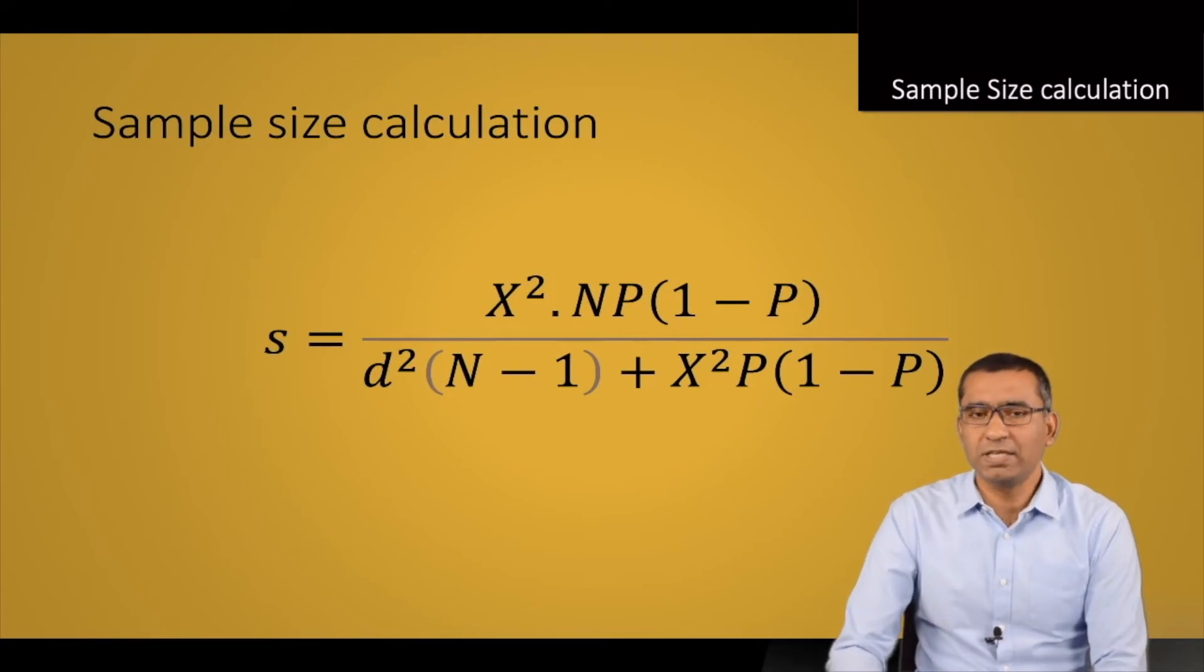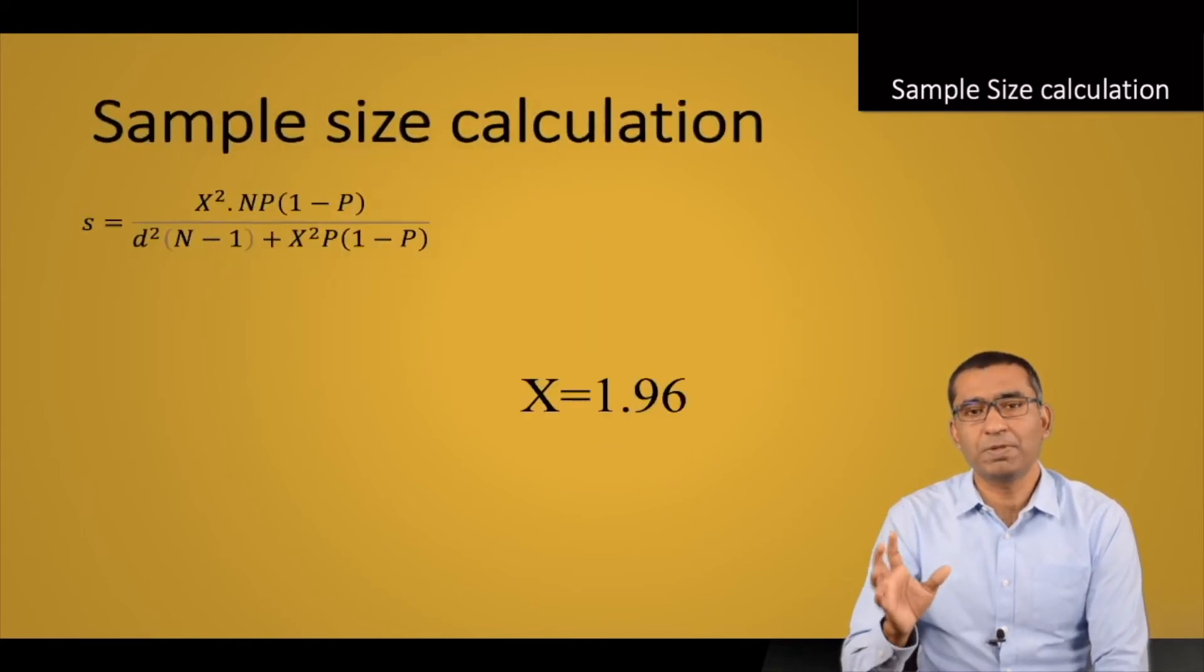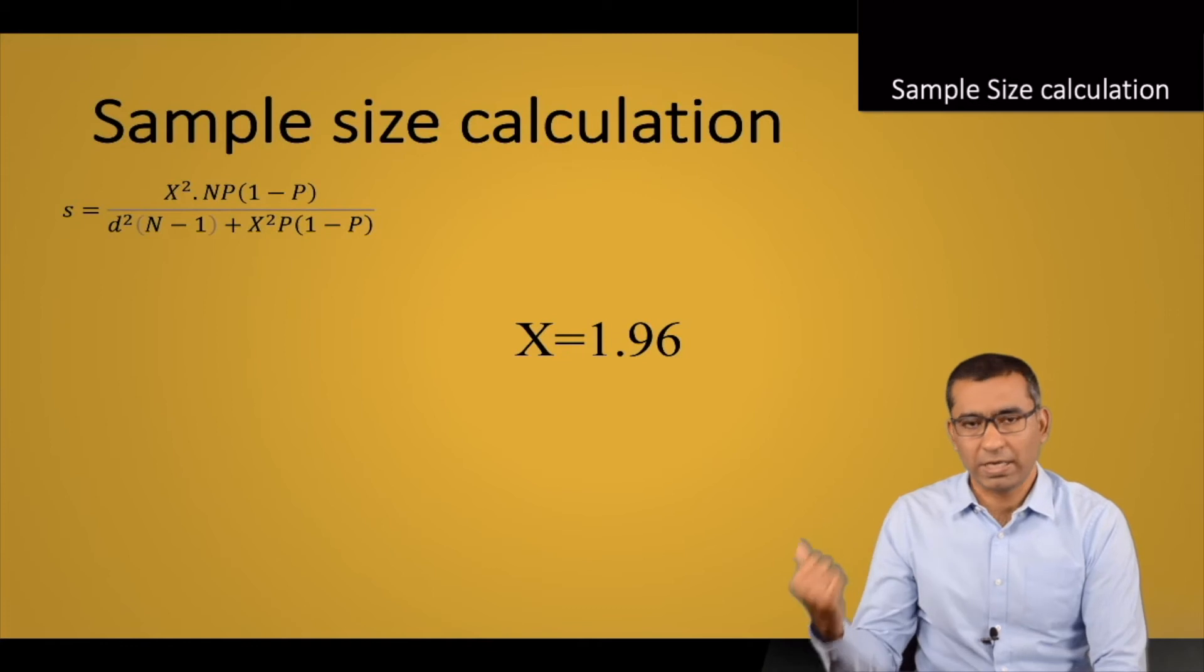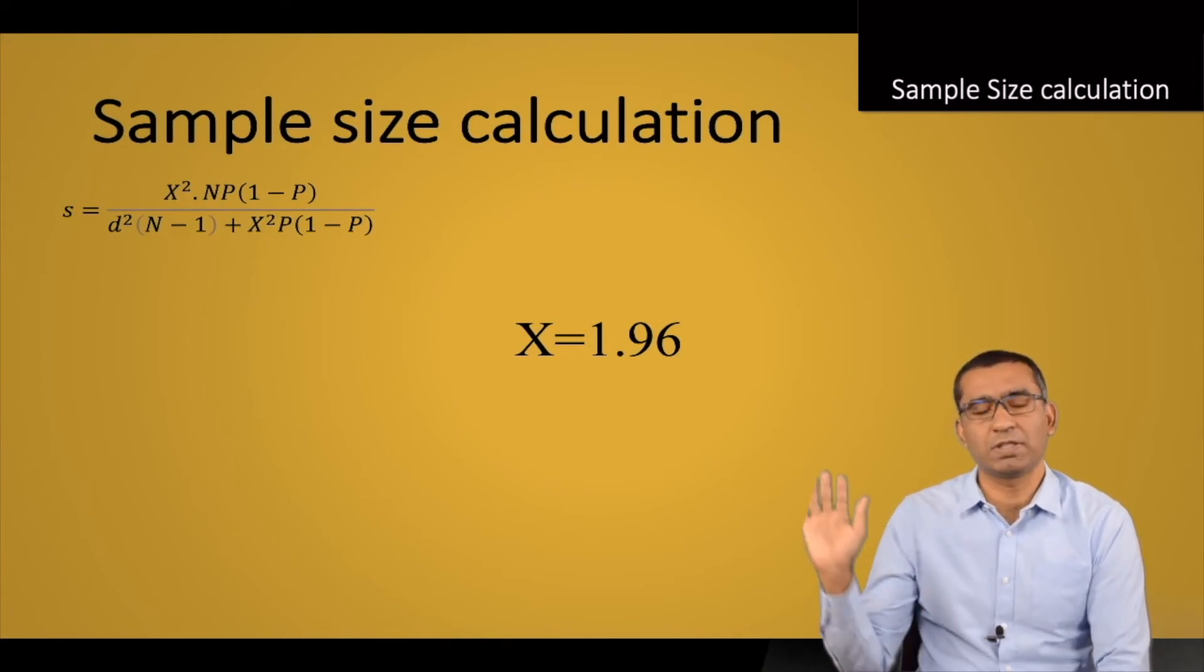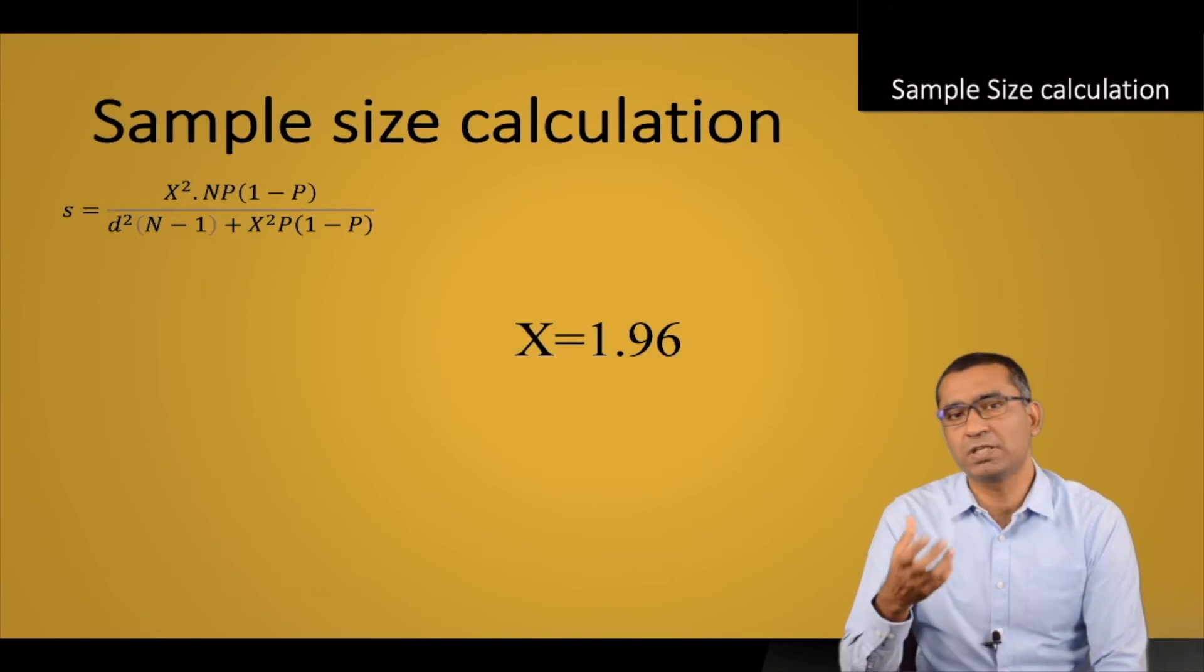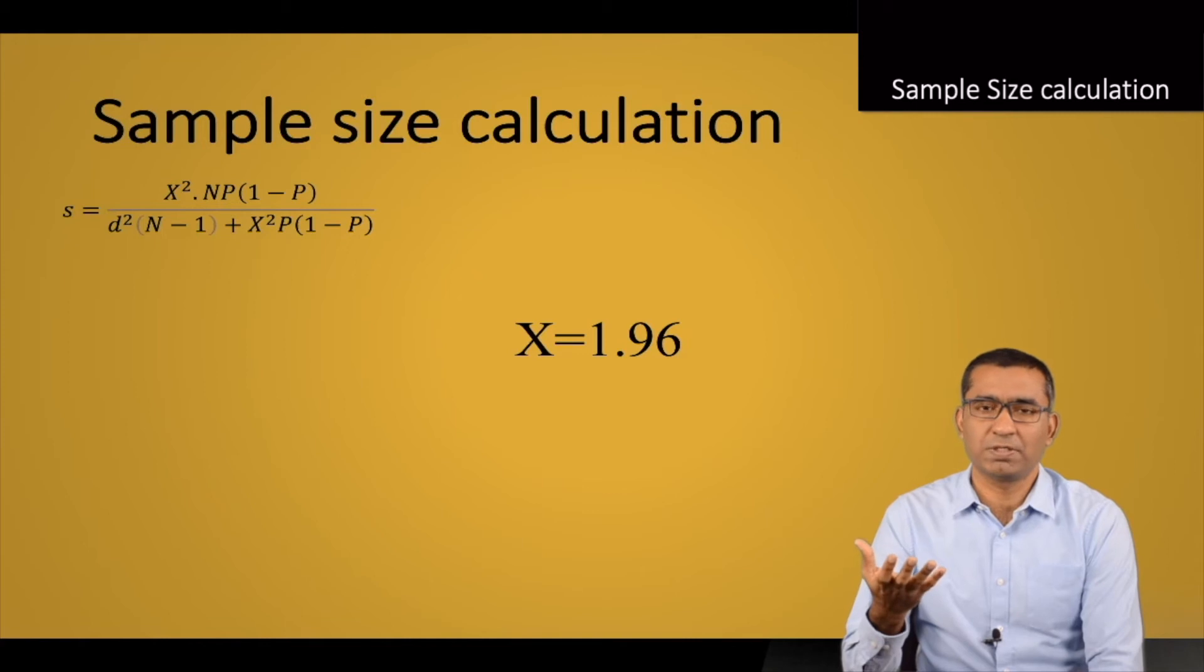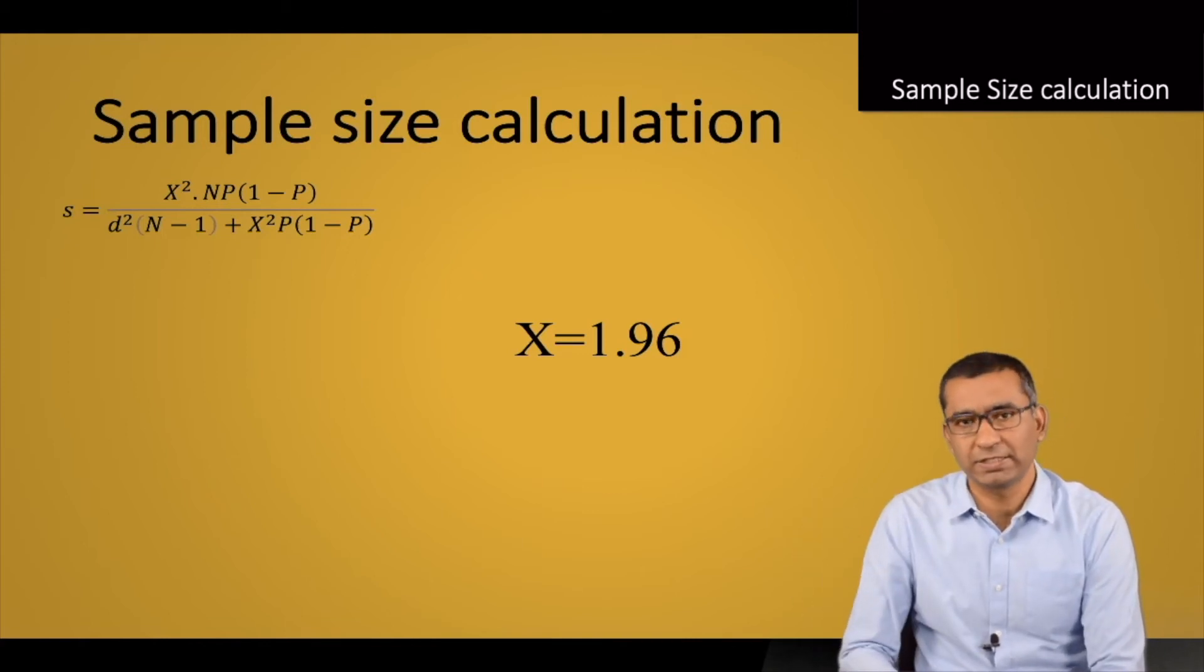For example, here X is 1.96—it is equivalent to your t-value if you are looking for 5% confidence interval, meaning t would be 1.96. This is the value you are going to use for X. If you are using a different confidence interval, this X value would be different based on the confidence level. But in normal cases, we use 95% as standard, so that is why this is 1.96.